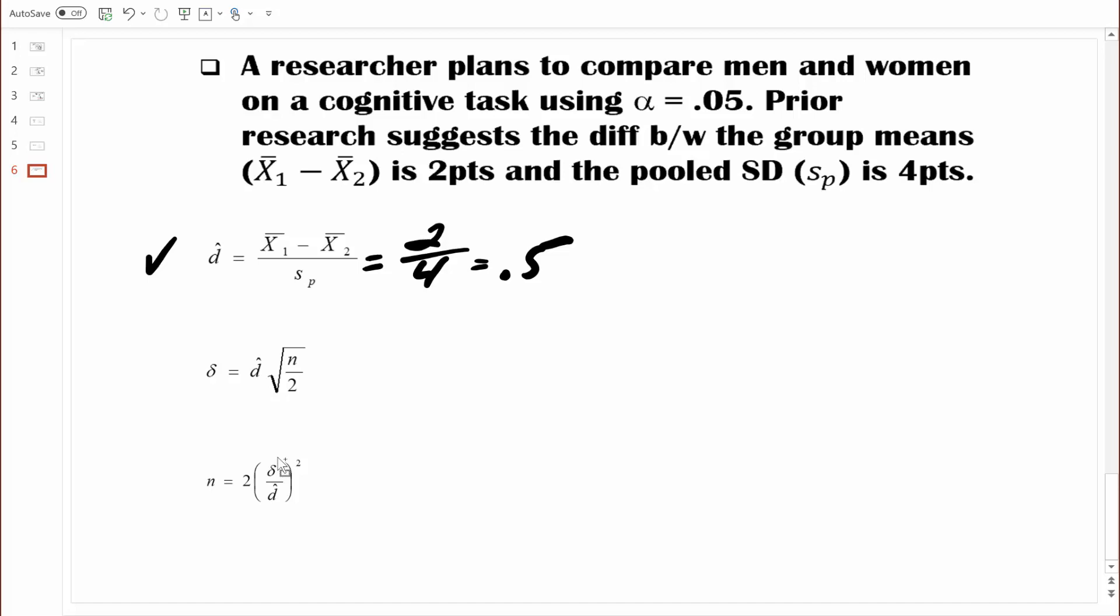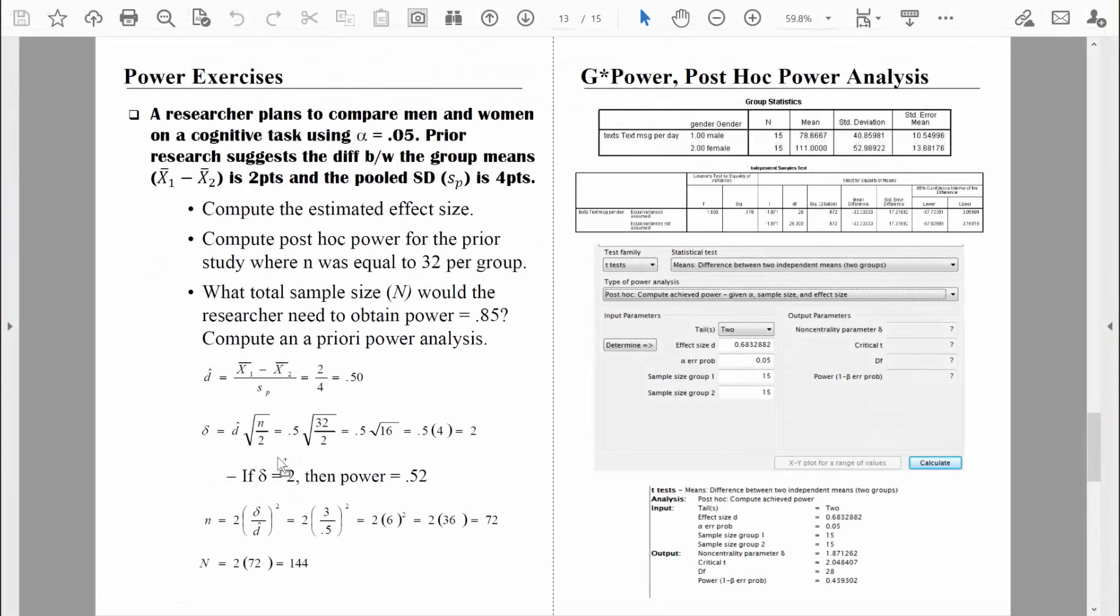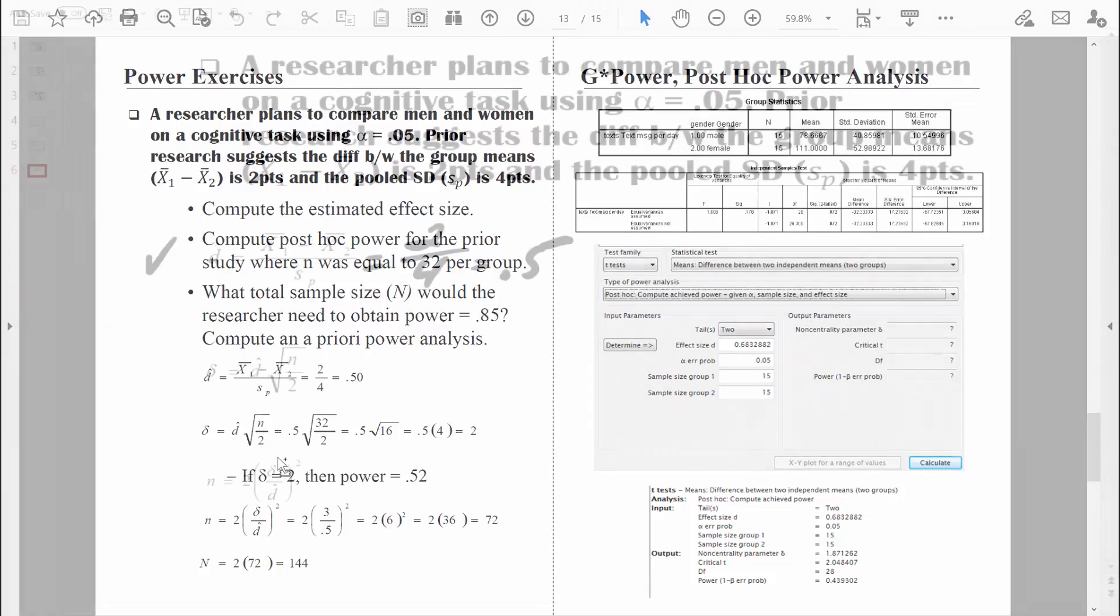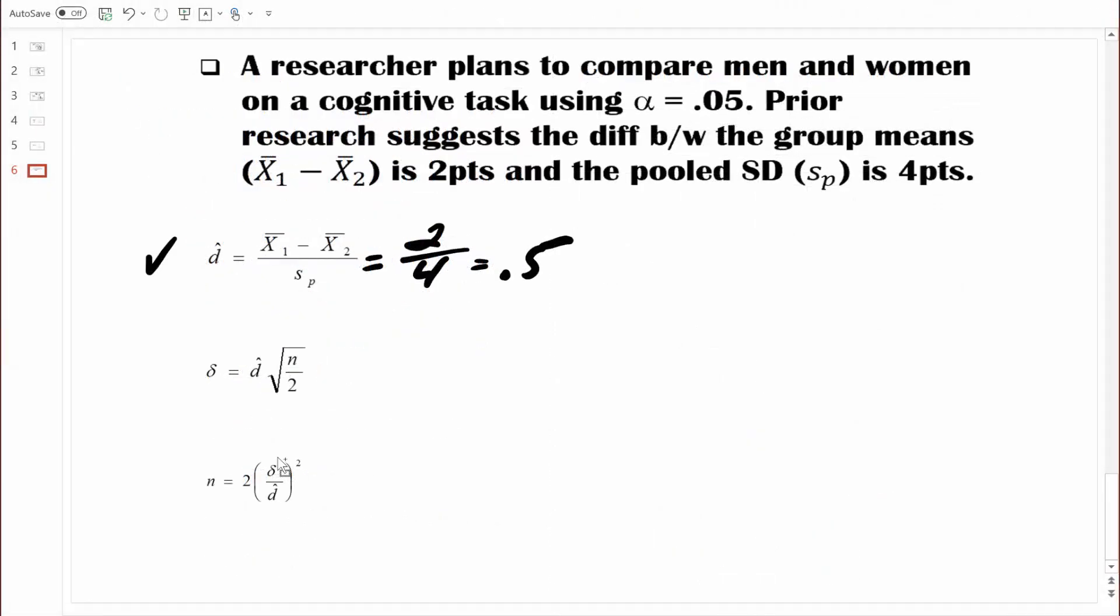Let's see what else we're asked to compute. Next, it says compute post hoc power for the prior study where n was equal to 32 per group. So we're going to assume that this study was already carried out and 32 people were men, 32 people were women. What we will do is compute how much power was achieved through that study. We call that post hoc power. Any time you need to compute post hoc power, you should always be thinking to yourself, you need to find the value for delta. Because if you can compute a value of delta, then you can use a power table to easily find out the power level achieved.